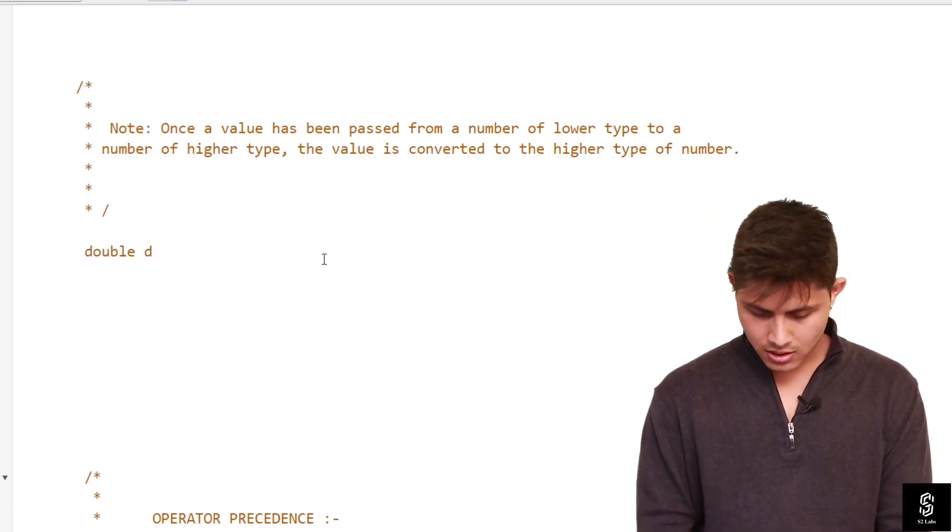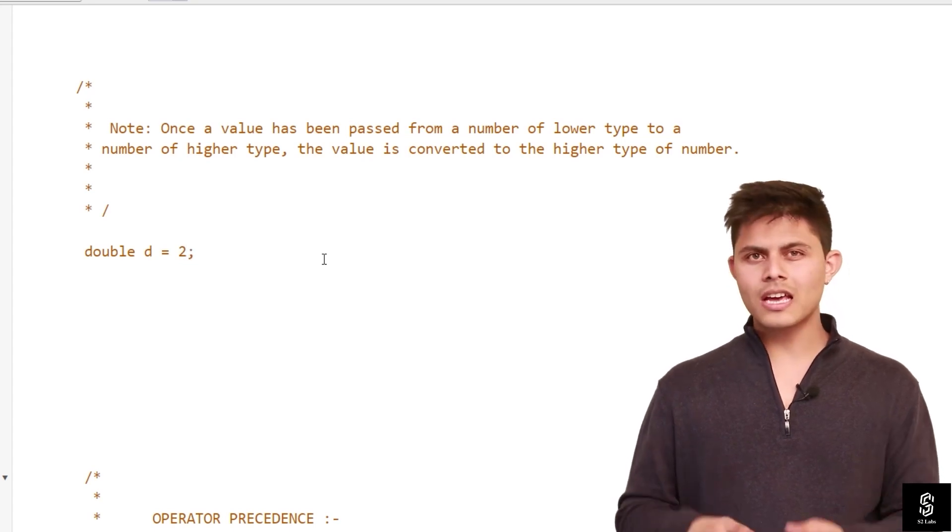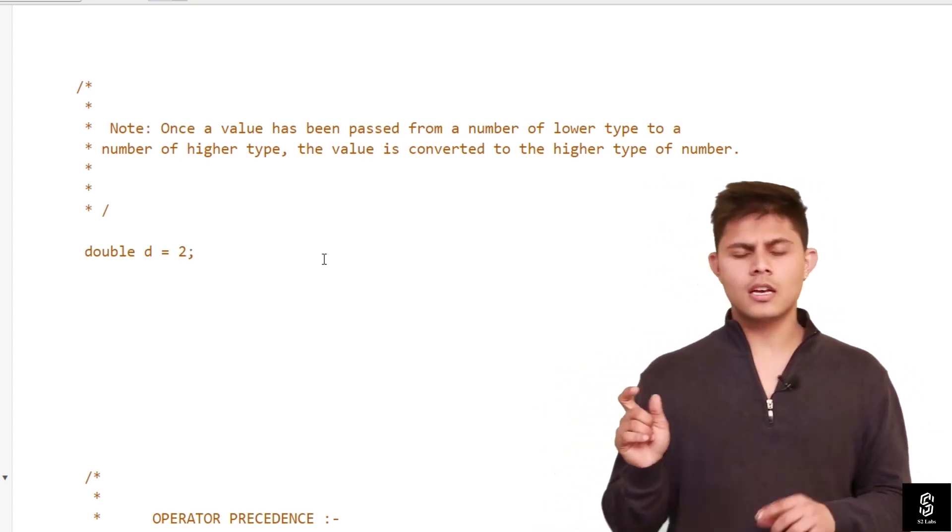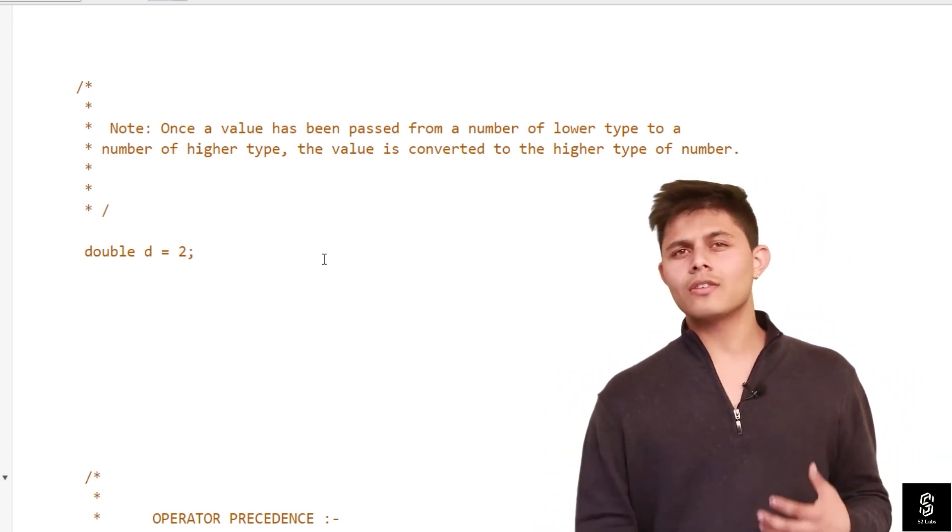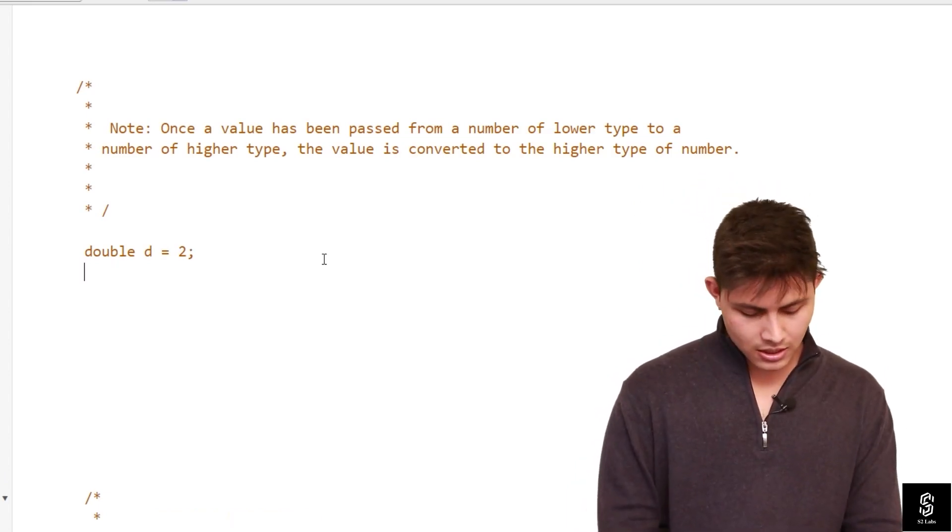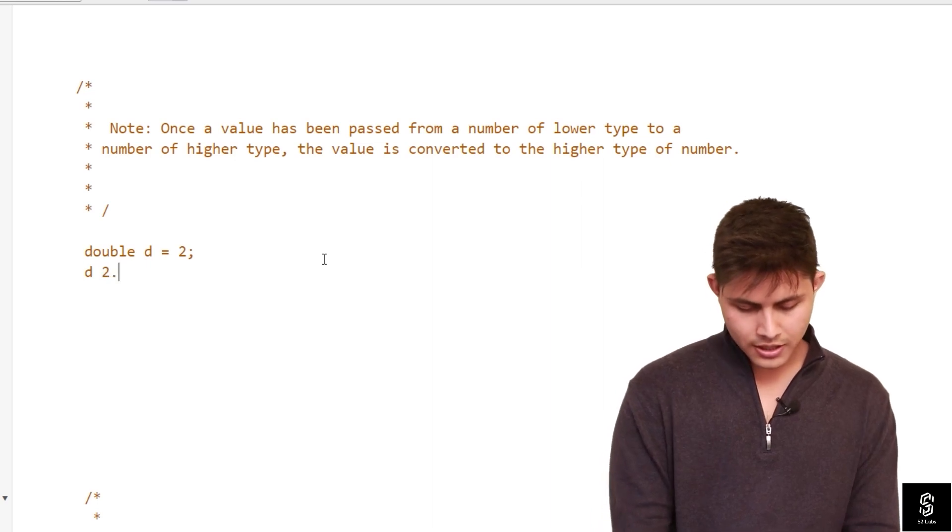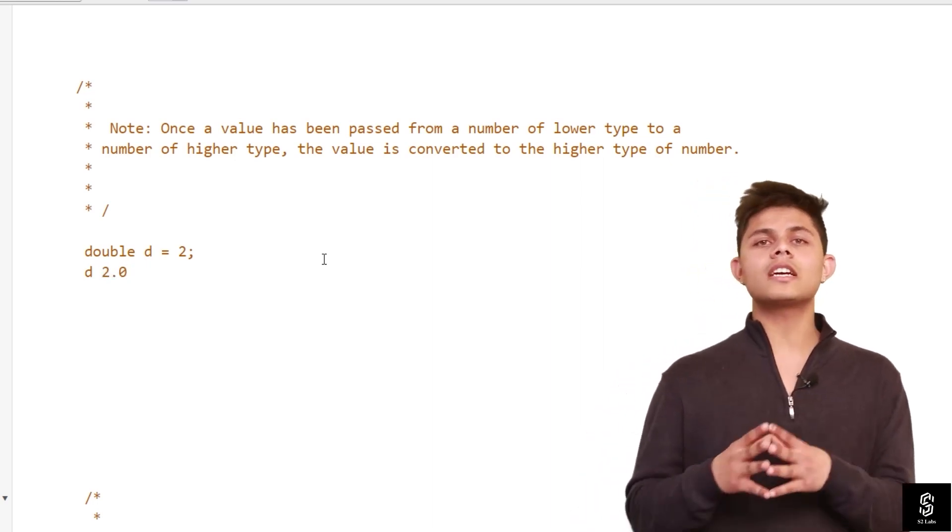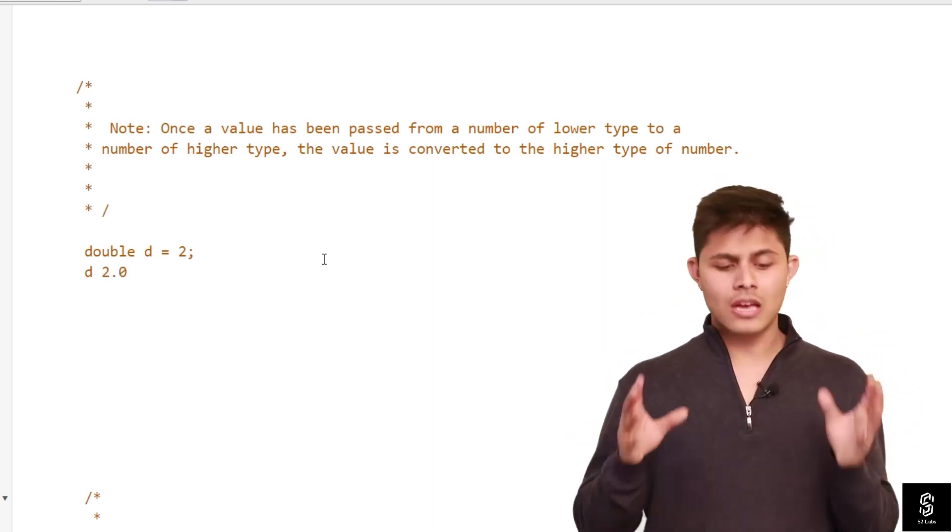If I am, double d equals to 2, here on the right-hand side I have got an integer, and on the left inside I'm storing this value into a double variable which is d. So if I print d, it will print 2.0 because it will automatically convert that integer value into the double value. This is exactly what this note is saying.